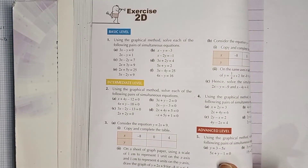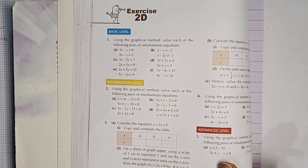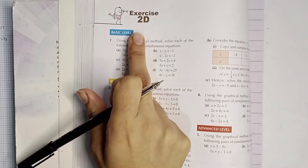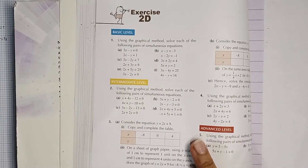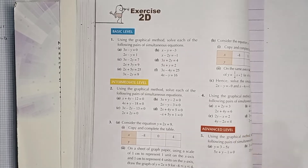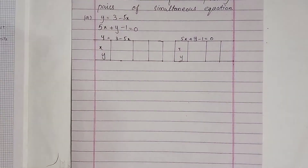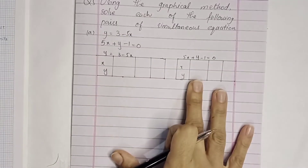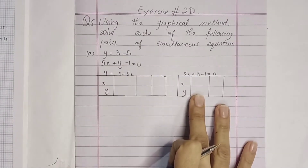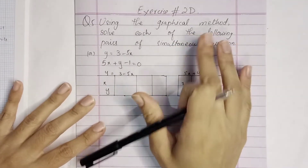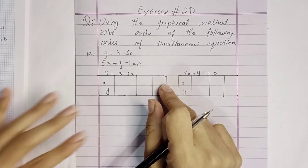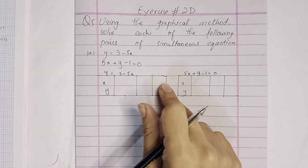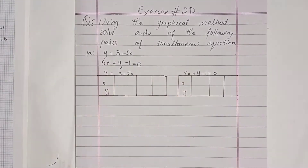Bismillahirrahmanirrahim, Assalamu Alaikum students. We are doing exercise 2D of book D2 today. We will do question number five of advanced level. Using the graphical method, solve each of the following pairs of simultaneous equations. We will use the graphical method to solve for x and y values.